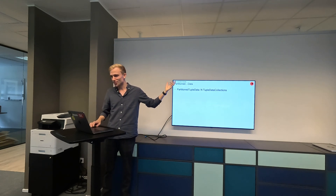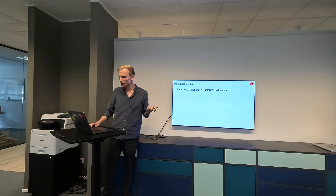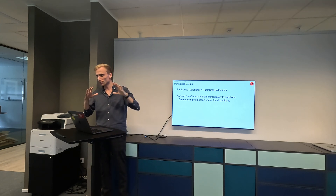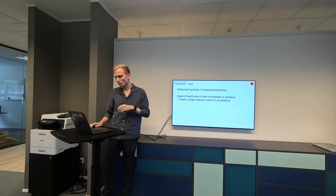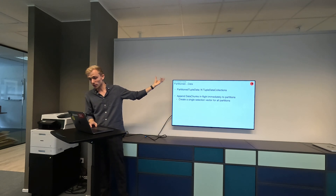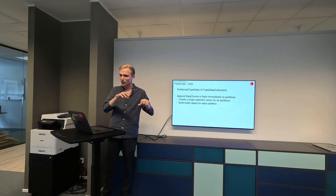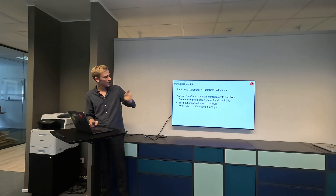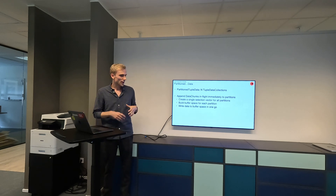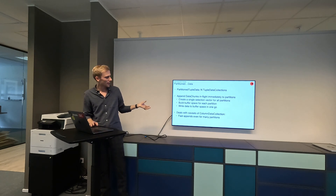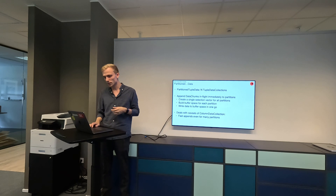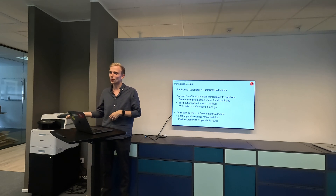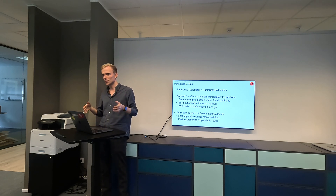This is where the partitioned version of the row format comes in and does a slightly better job. We can append data in flight immediately to partitions, going from columnar data to partitioned row data. Instead of creating multiple selection vectors, we create a single selection vector for all partitions, ask each partition to build a little buffer space, get all the pointers for where we'll write the data, and write all data in one go — no matter how many partitions. The appends are faster even at scale, and repartitioning is surprisingly fast because data isn't decomposed — we copy whole rows instead of going back to individual values in the columnar format.